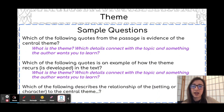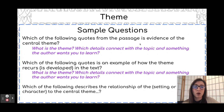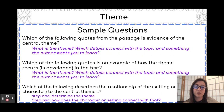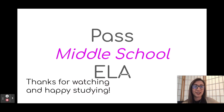Lastly, we have: 'Which of the following describes the relationship of the setting or a character to the central theme?' In other words, you have to determine the theme first, and then think about how a certain character or the setting might connect with that theme. I know that was a lot of information, but I hope you learned a lot. Thanks for watching and happy studying.